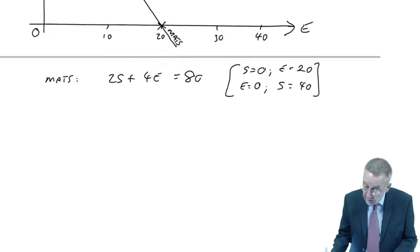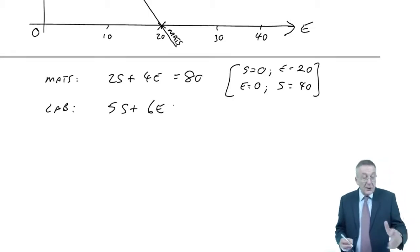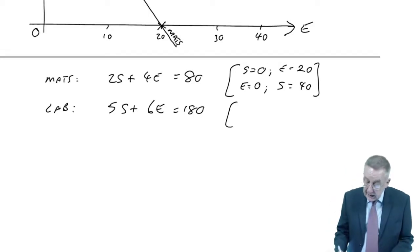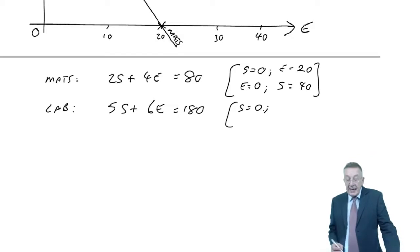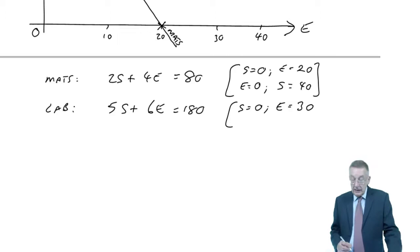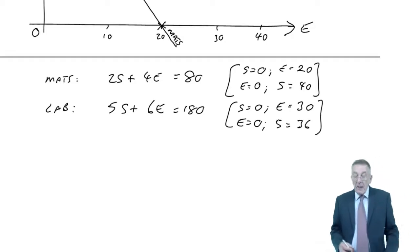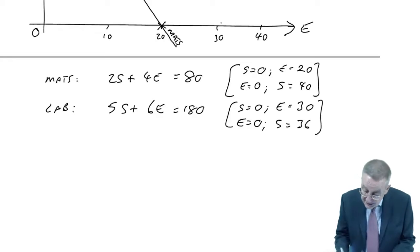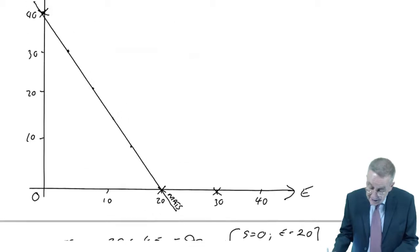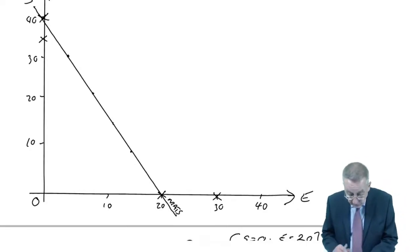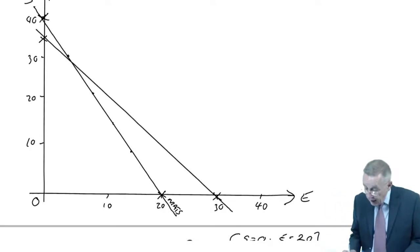Well, in a similar way, we do it for every constraint. So labour, what was the constraint? 5S plus 6E, and to be less than 180, we're going to draw the equals. And again, to fix a line, when S equals 0, 6E equals 180, so E would be equal to 30. When E equals 0, 5S would be equal to 180, so S would be equal to 36. To fix a line, so off we go again. S naught E 30 is there. E naught S 36 is there. Join them up. And there is our labour line.